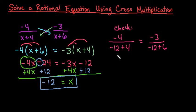But in this case, negative 12 does not give us 0 in the denominator. So we would just simplify each fraction. The negative 12 plus 4 gives us negative 8. The negative 12 plus 6 gives us negative 6.